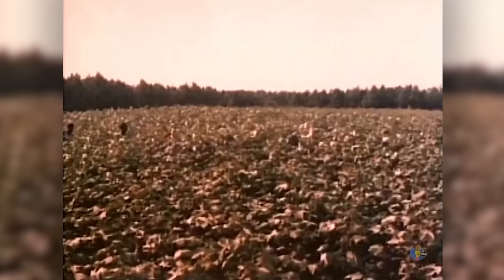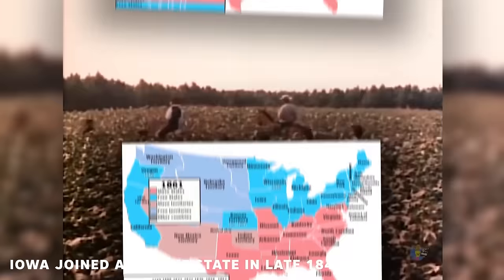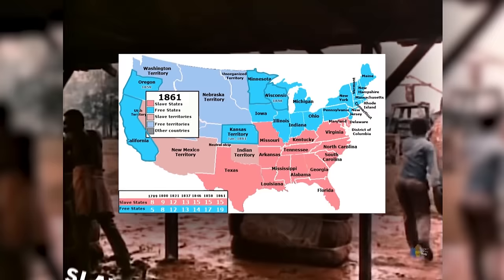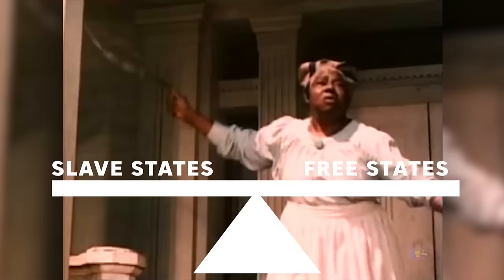Until 1850, the balance was kept between the free states and the slave states, but after the mid-19th century the situation tilted in favor of the Union because five new states joined the U.S. For the purpose of this video, we are going to look at what an enslaved African American's life was like in 1850 when the balance was still maintained.